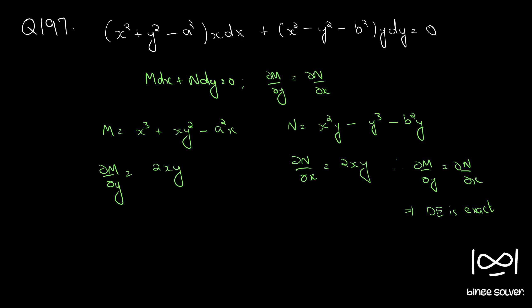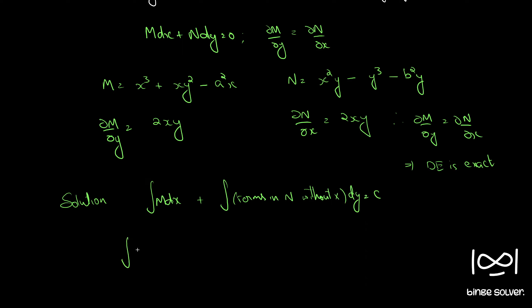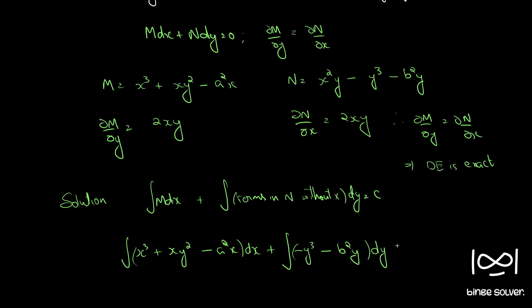So we use the solution formula: ∫M dx + ∫(terms in N without x) dy = constant. We have ∫(x³ + xy² − a²x) dx + ∫(−y³ − b²y) dy = c.